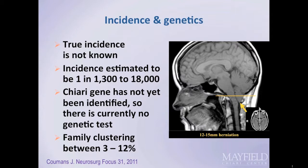The true incidence and genetics associated with Chiari malformation are not fully known. The incidence is estimated to be between 1 in 1,300 to 18,000. A gene for the malformation has not yet been identified; however, Chiari malformations do tend to cluster in some families with an incidence of 3 to 12%.